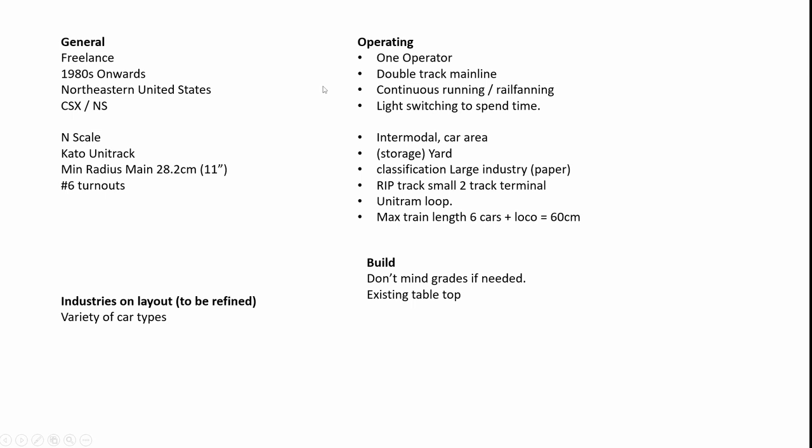It's meant to be operated by one person, with a double track mainline and continuous running, and then perhaps some industries on the side for switching. Requirements include several large industries: an intermodal slash car area, a yard also acting as staging, a large paper industry, a small terminal, and a Unitram loop.